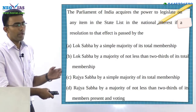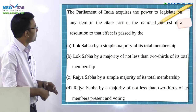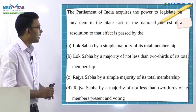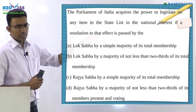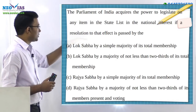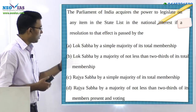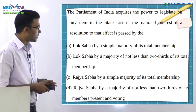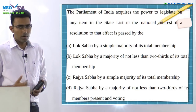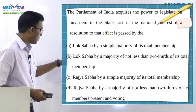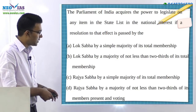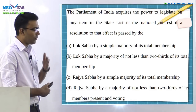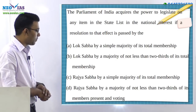The question today is a 2016 previous year question: The Parliament of India acquires the power to legislate on any item in the state list in the national interest if a resolution to that effect is passed by — option A: Lok Sabha by a simple majority of its total membership; option B: Lok Sabha by a majority of not less than two-thirds of its total membership; option C: Rajya Sabha by a simple majority of its total membership; option D: Rajya Sabha by a majority of not less than two-thirds of its members present and voting.